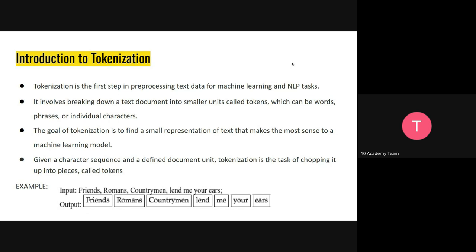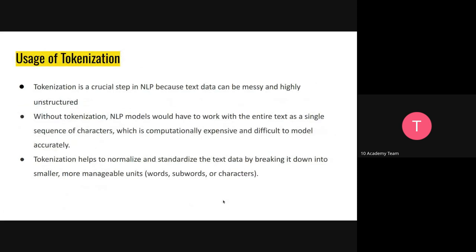The goal of tokenization is to find a small representation of our text data. For example, if you have a sentence and you tokenize it, it depends on what tokenization you're using. In this case, it's word tokenization, so it's breaking down the sentence into words — the words are becoming their own tokens. Tokenization is not only for words; there are a lot of tokenization algorithms out there that you can experiment on.